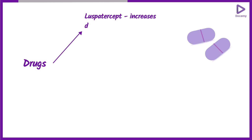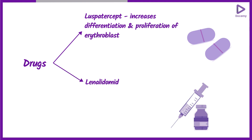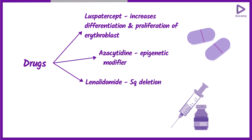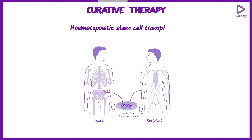Specific drugs used in the treatment of MDS include luspatercept, which increases the differentiation and proliferation of erythroblasts; lenalidomide, used in 5q deletion; azacitidine, an epigenetic modifier used in MDS; and alemtuzumab, a monoclonal antibody directed against CD52. The only curative therapy is hematopoietic stem cell transplantation.